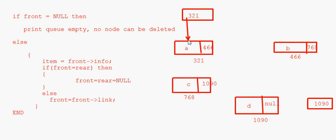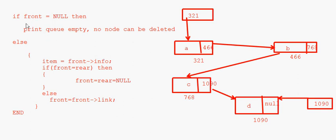The links connect the nodes, and rear is pointing to the last node. Now let's trace through: front is equal to null? No, in our case front is not null, so we come to the else part. Item is equal to front's info — we are storing the information of the node to be deleted. Then: if front is equal to rear, that means there is only one node in the queue.